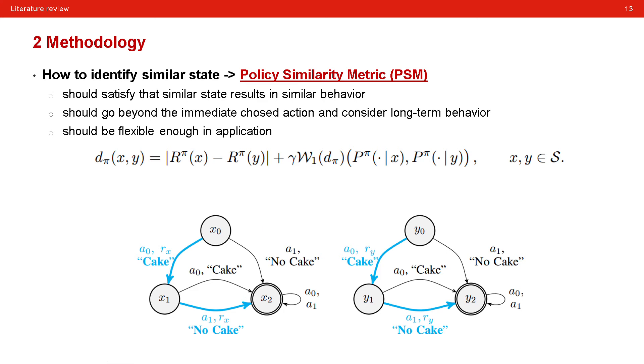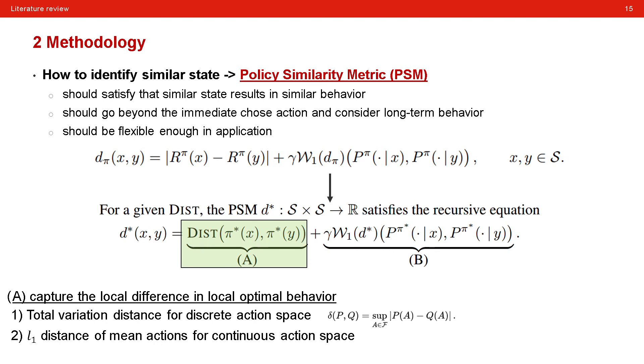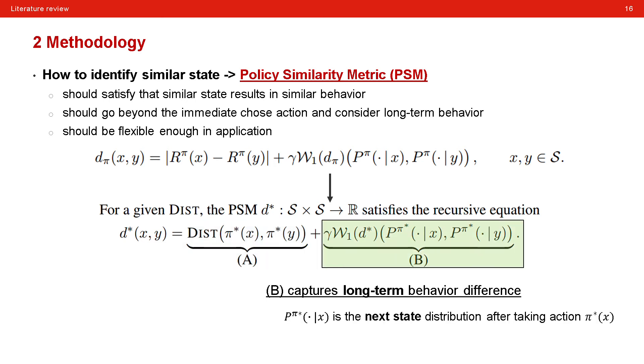To this end, they propose the policy similarity metric called PSM. They use the policy difference to capture the local difference in local optimal behavior. Specifically, the DIST here is the distance of two policies. And it can be the total variation distance for discrete action space, or the L1 distance of mean actions for continuous action space. And they follow the π-bisimulation metric to use the one-Wasserstein metric to measure the distance of next state distribution. In this way, they say that they can capture the long-term behavioral difference since the next state distribution is considered. Notably, such form is very similar to the recursive Q-learning Q-value approximation.